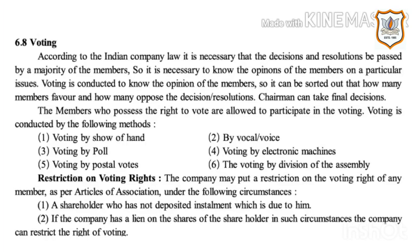Restrictions on voting rights: The company may put a restriction on the voting right of any member as per the articles of association under the following circumstances. First, a shareholder who has not deposited an installment which is due. Second, if the company has a lien on the shares of the shareholder, the company can restrict the right of voting.